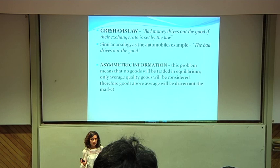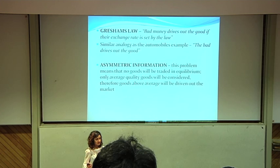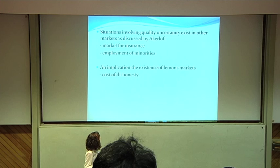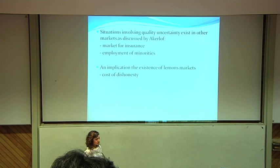This is similar to the analogy of Gresham's law, where Gresham's law states that bad money drives out the good in a market where the exchange rate is set by the law. Asymmetric information is a big problem because it means that no goods will be traded in the market effectively, since only average quality goods are going to be considered and the bad will drive out the good cars. Other situations Akerlof describes to illustrate the lemons problem include the market for insurance and the employment of minorities. An implication of the lemons market is the cost of dishonesty.